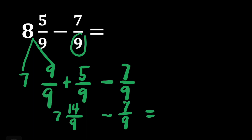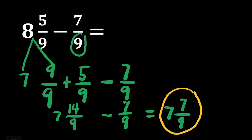Then the answer would be 7. 14 minus 7 is 7, and copy our denominator, which is 9. So it's really easy for us to solve this kind of problem. And we're done.